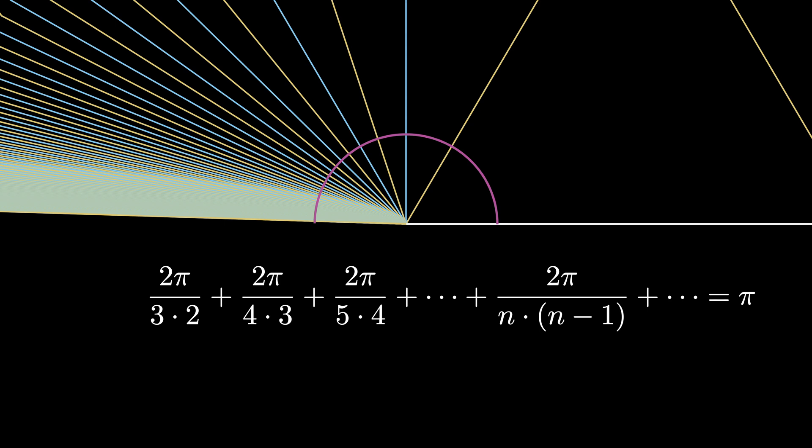But now we can cancel the π in the numerators of the fractions on the left with the π on the right, and we see that 2 over 3 times 2 plus 2 over 4 times 3 plus 2 over 5 times 4 and so on must equal 1.